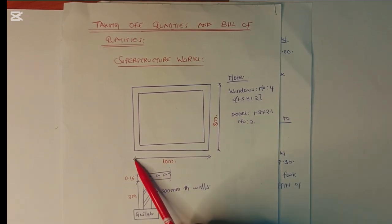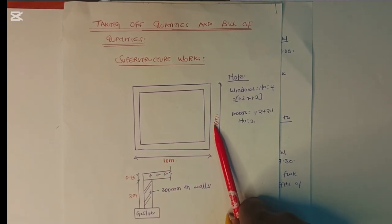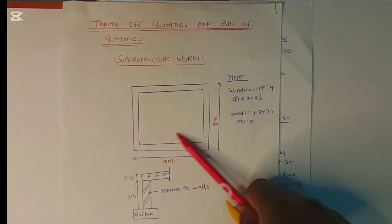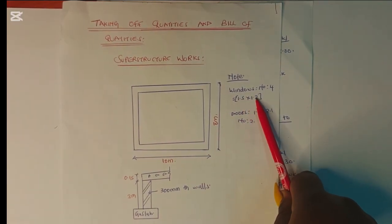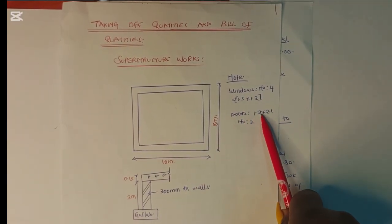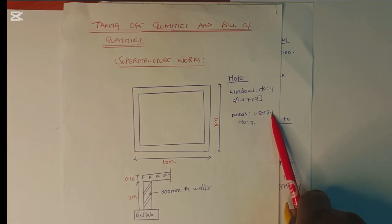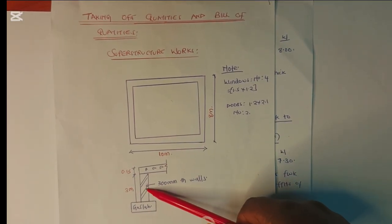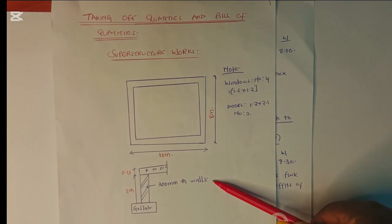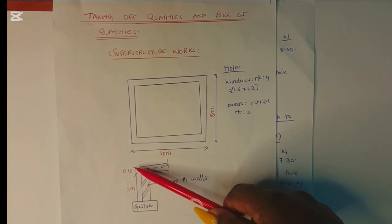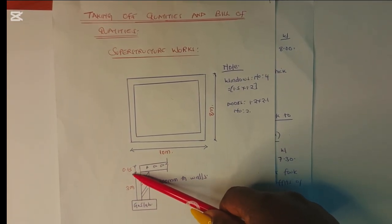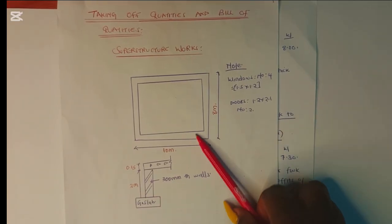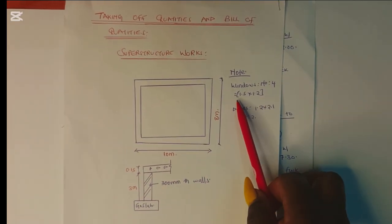This is a superstructure wall which has a length of 10 meters and a width of 8 meters. We have four windows at 1.5 by 1.2, and two doors at 1.2 by 2.1. Looking at the section, the wall is 300 millimeters thick, the height of the wall is 3 meters, and the thickness of the wall is 150 millimeters.